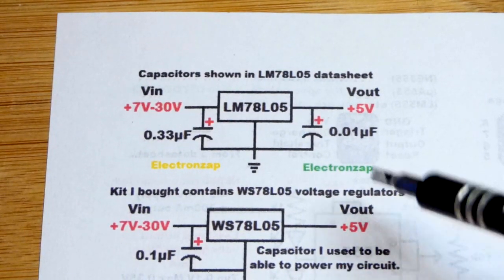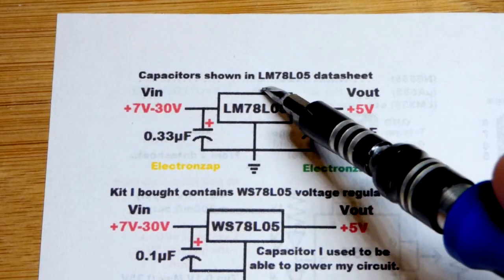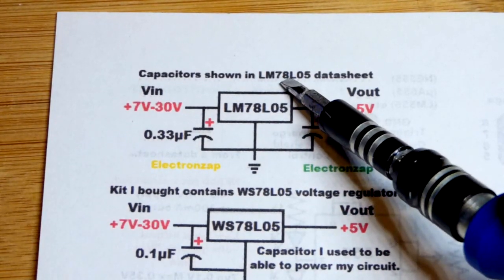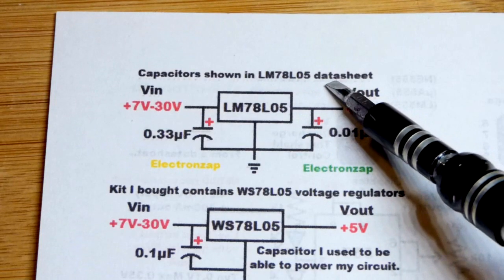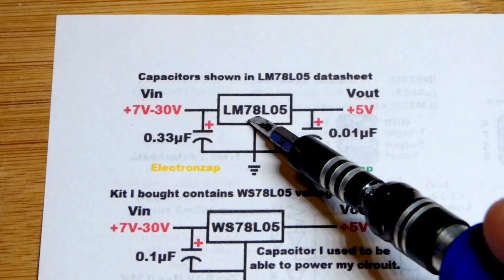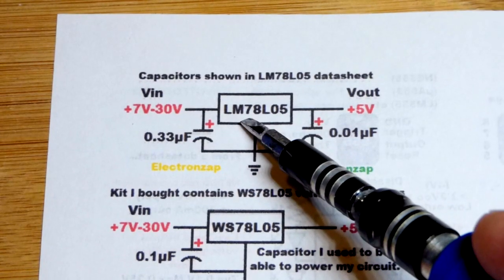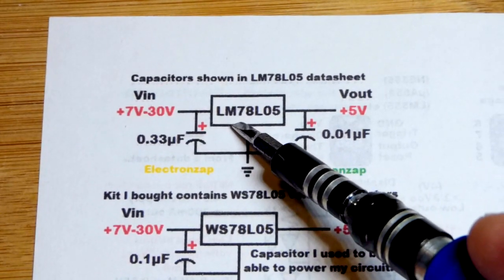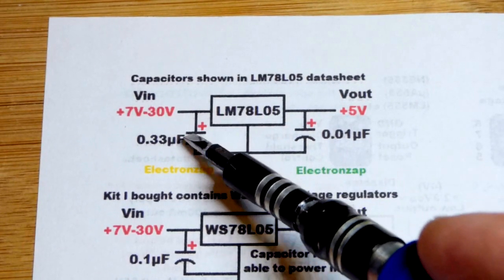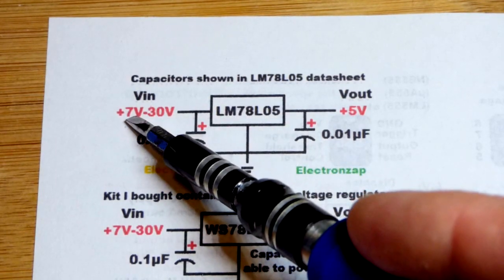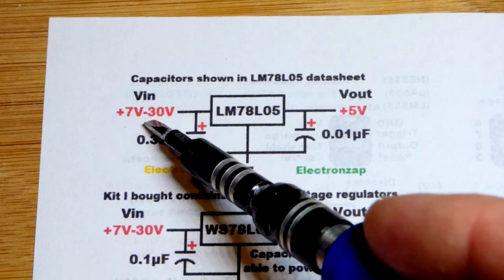But in any case, here we have a schematic. So the LM7800 series integrated circuit data sheet is the easiest to find if you type in 78L05. Texas Instrument has that data sheet, and they show the capacitors that you see there for using it. So as I said before, you can take 7 volts in, up to 30 volts in.